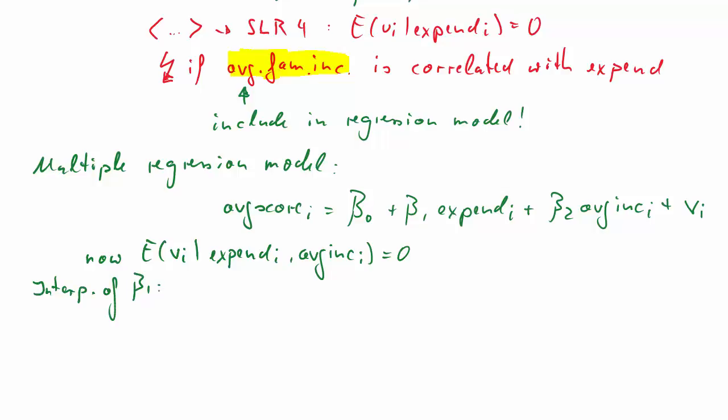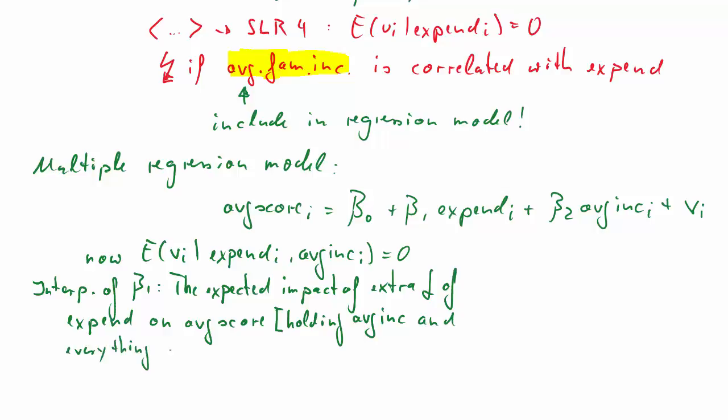So how do we interpret beta 1 in this new, now expanded, multiple regression model? The interpretation is, almost as before, it represents the expected impact of an extra pound of expenditure on the average score of children in a school. But we will again have to qualify that. Firstly, by saying that we have to hold average income, the average income, the other variable, and everything in the error term Vi constant. That is, as before, we call that the Ceteris Paribus condition, or sometimes we also call this the partial effect.